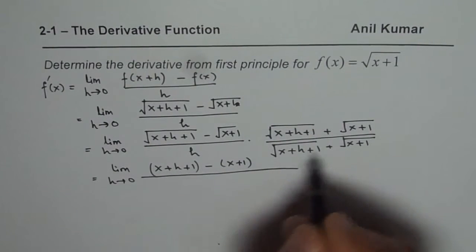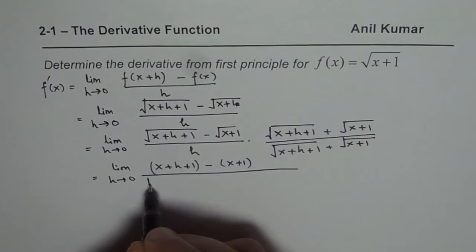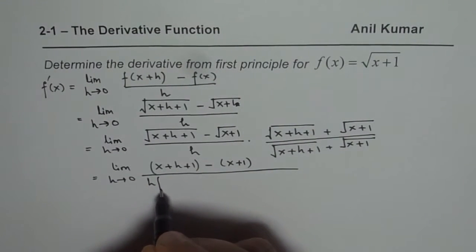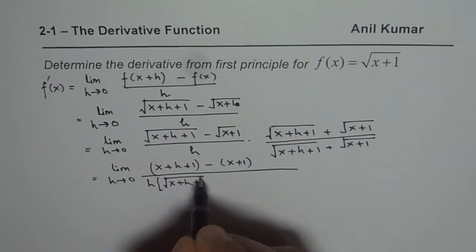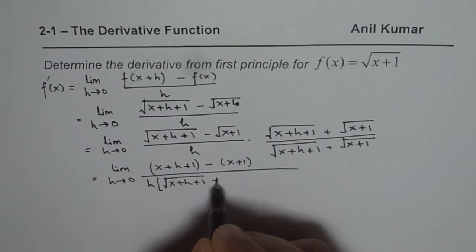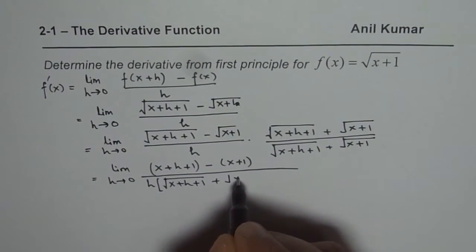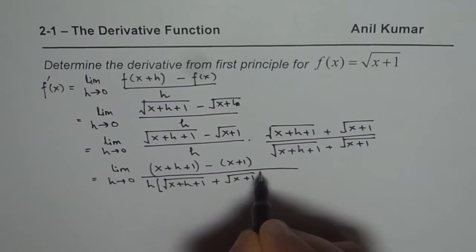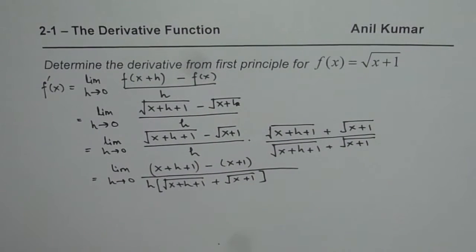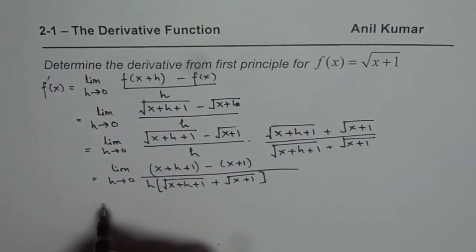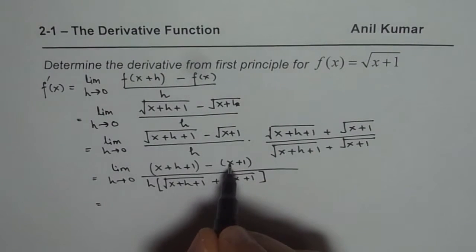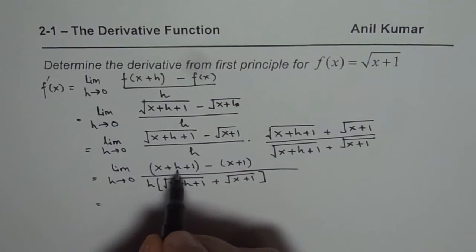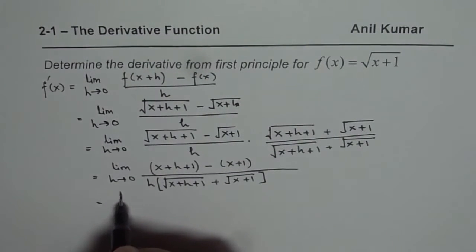In the numerator, x minus x is 0 and 1 minus 1 is 0, so you are left with h. The denominator is h times [square root of (x plus h plus 1) plus square root of (x plus 1)].